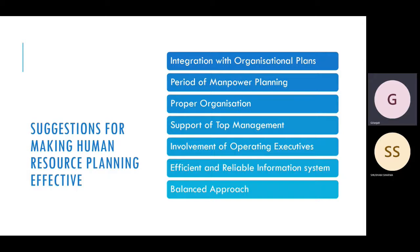The third suggestion is proper organization — the human resource department should be a separate cell, just as there are other departments like finance, IT, and marketing. Its main task is to focus on and coordinate all planning work at all levels. The fourth suggestion is support of top management — if top management provides resources, coordinates, and gives cooperation, it will result in successful planning.